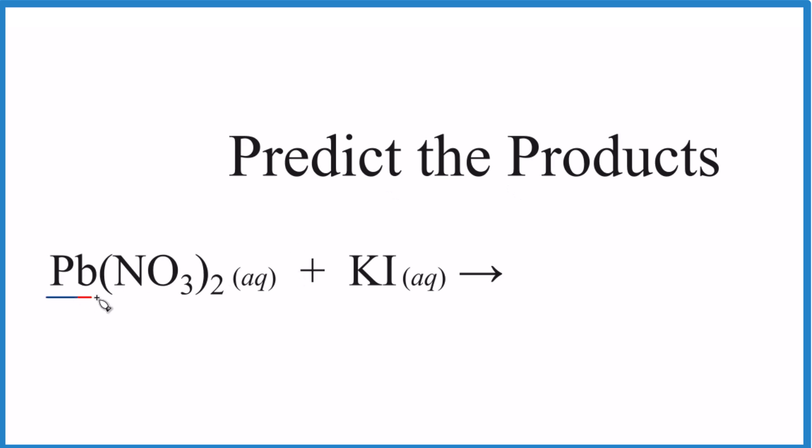We can see we have a metal here, a group of nonmetals, and then a metal and a nonmetal. This is going to be a double displacement reaction. So by knowing the type of reaction, we can predict the products.